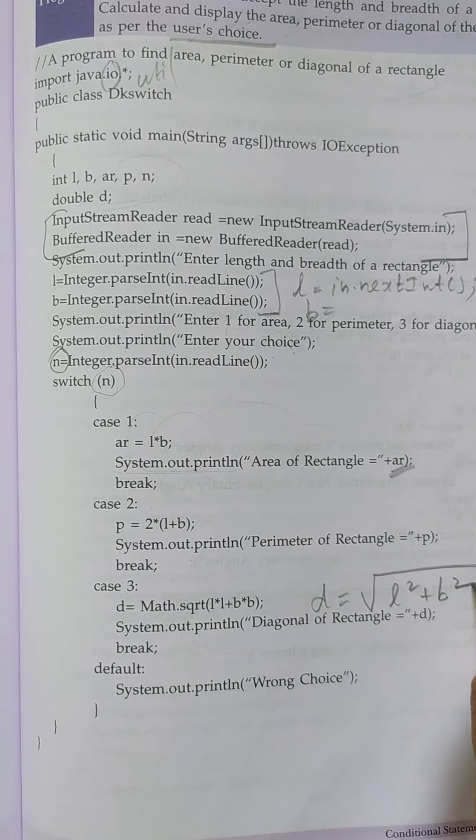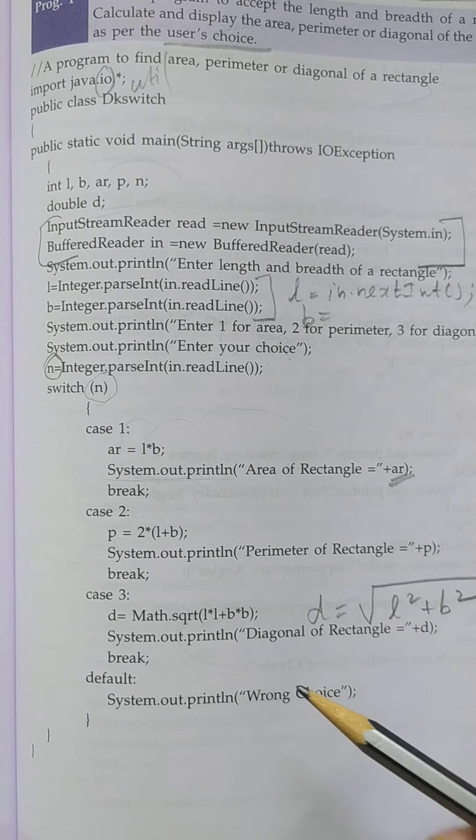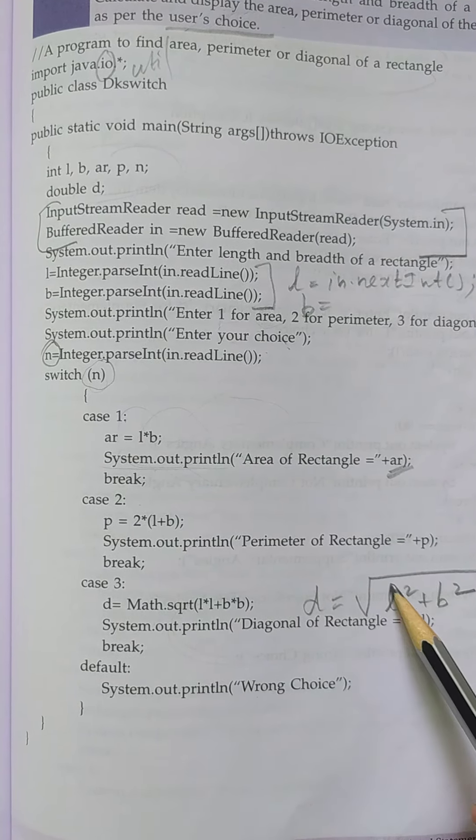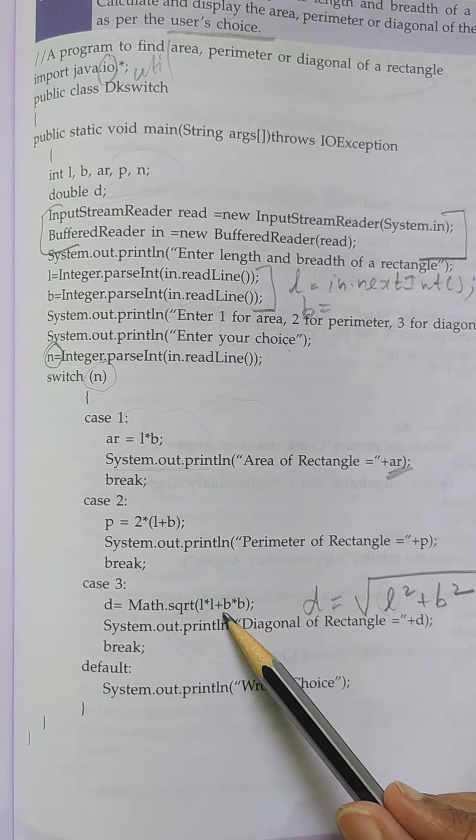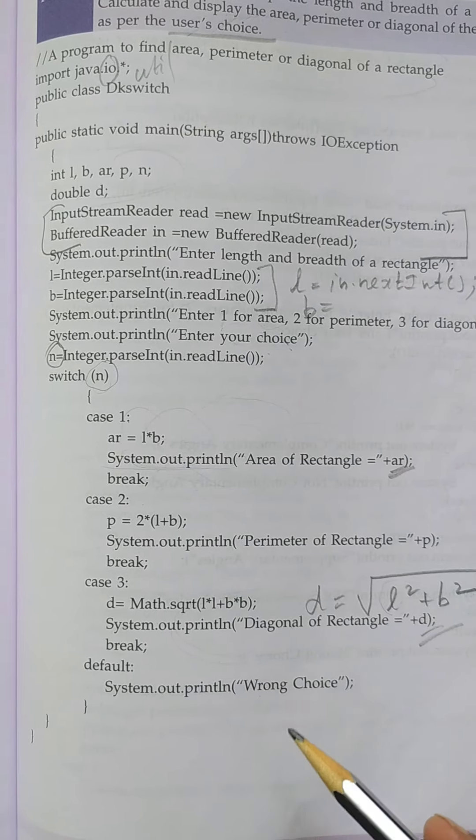In the keyboard we can't give the square root, so we are using the mathematical function sqrt of L square means L * L plus B * B. So finally it is also displaying.